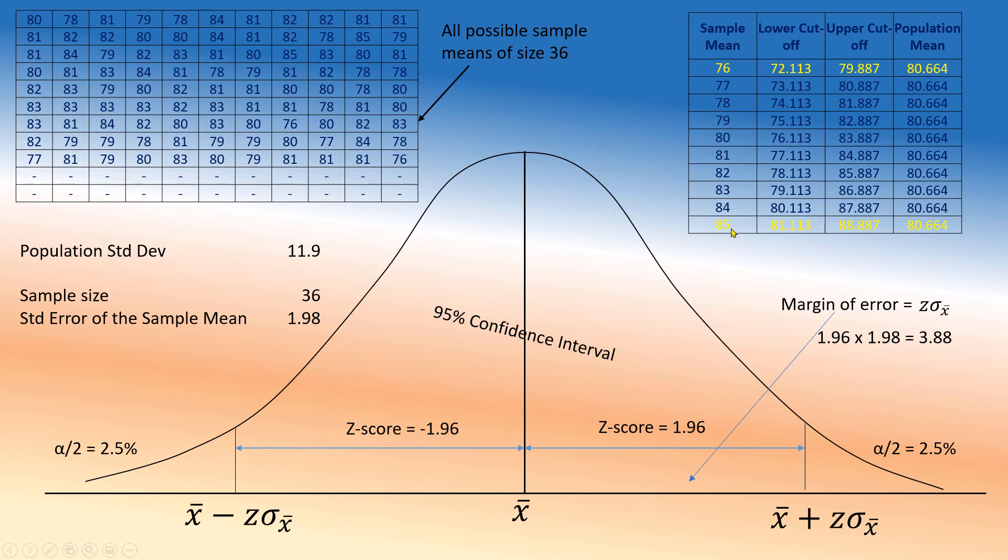your lower cutoff is 81.113. That's the lower cutoff. Upper cutoff is 80.887. So you're going to say, I'm 95 percent confident that the population mean lies between these two numbers, but actually it is 80.664, which means you missed the boat again.